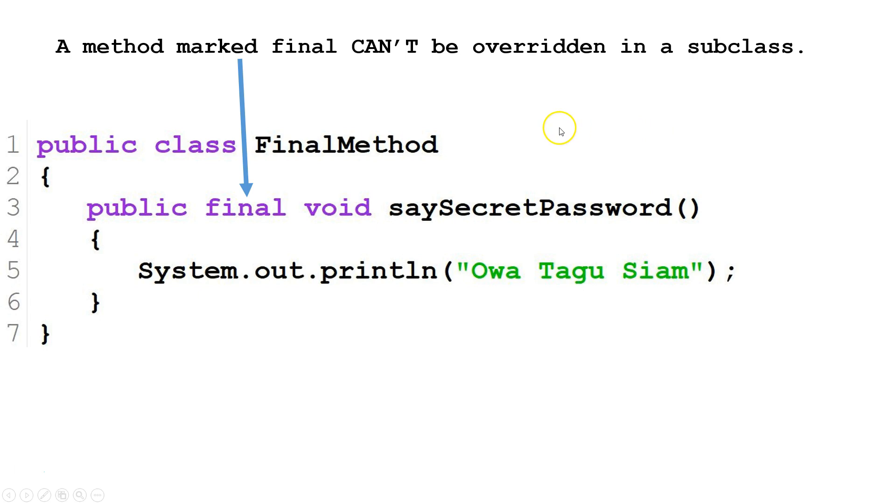Here is an example of a method that has been marked final. Methods that have been marked final cannot be overridden in subclasses, so if we make a subclass of final method, we can't override say secret password.